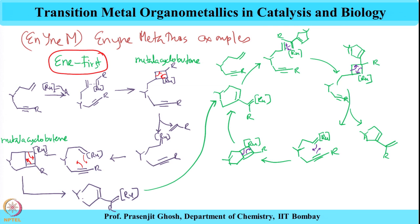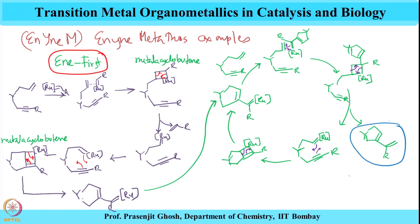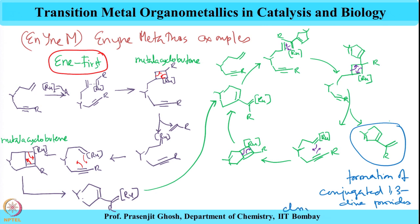That metallocyclobutene further undergoes rearrangement to give the species shown. The driving force of this reaction is the formation of conjugated 1,3-diene. Formation of conjugated 1,3-diene provides the driving force for the reaction.